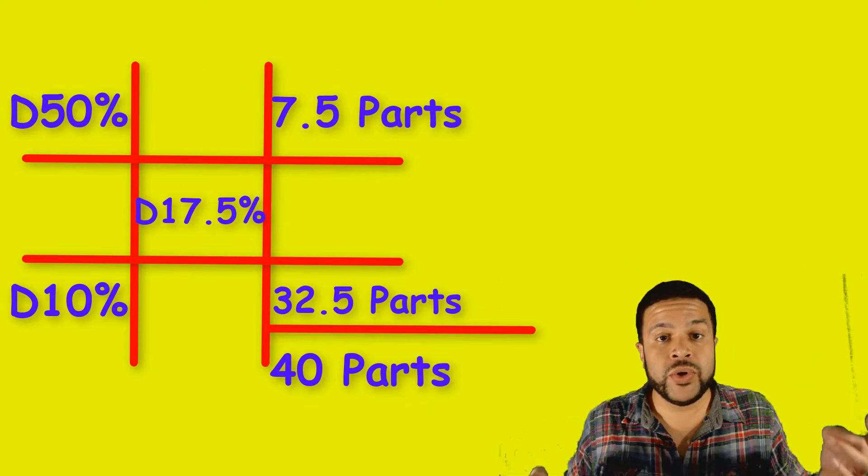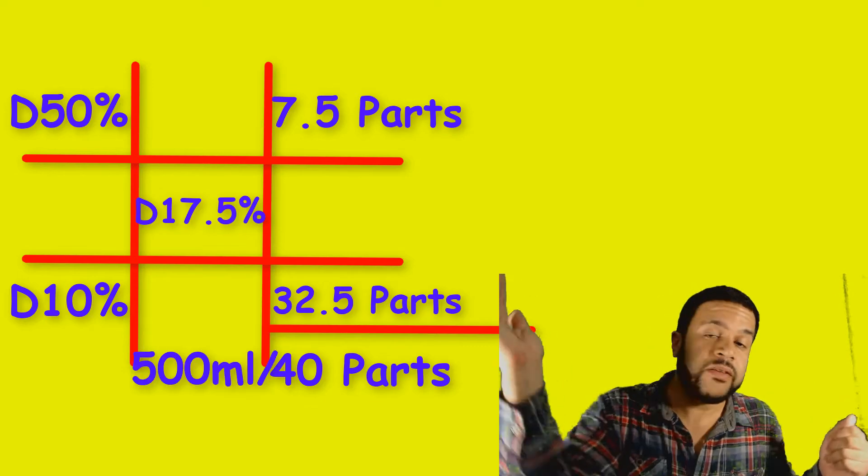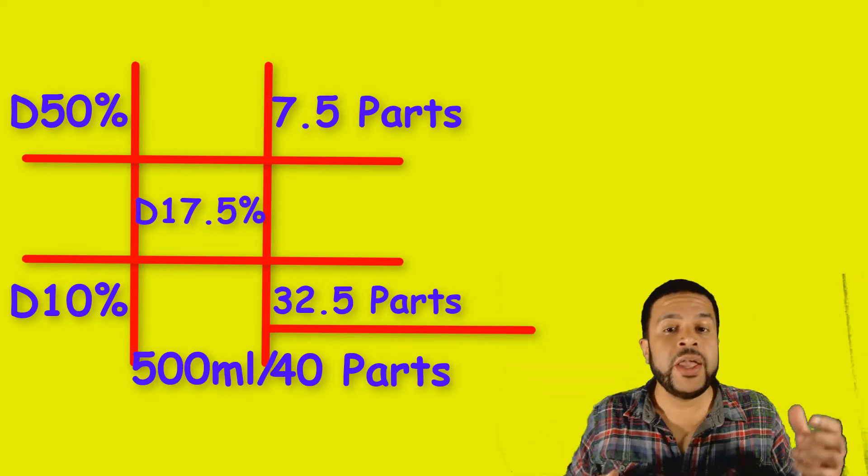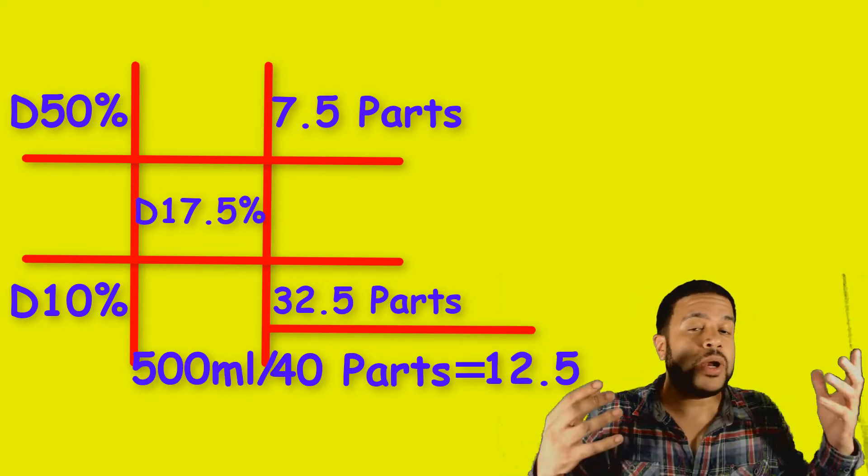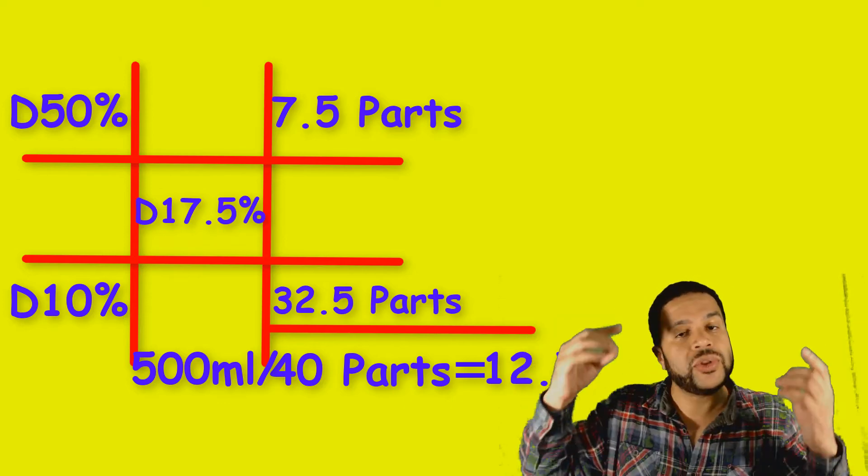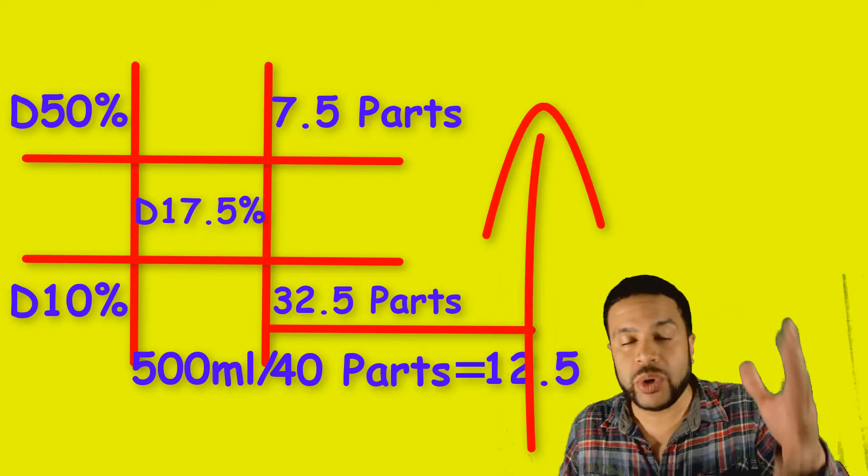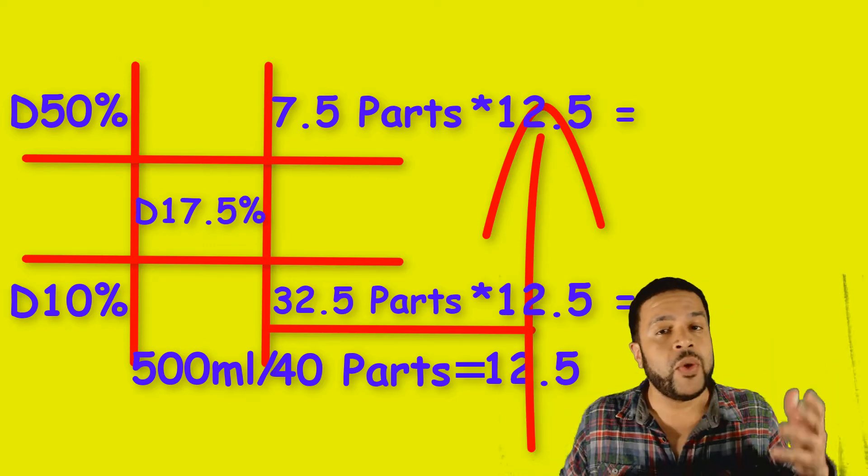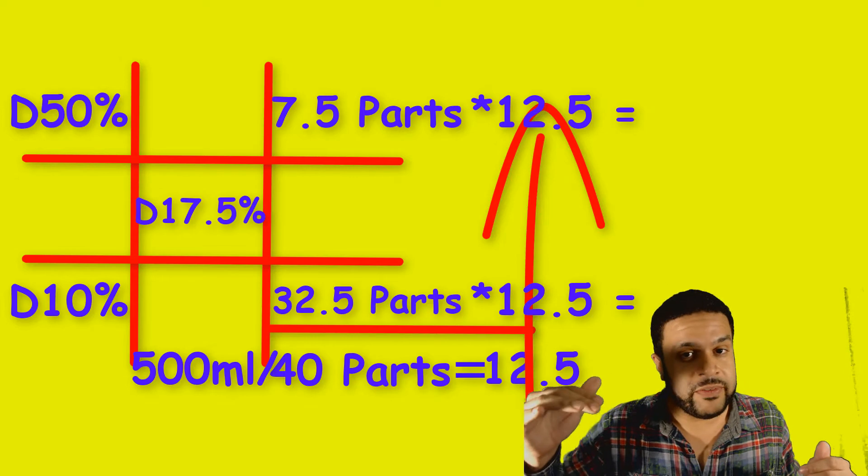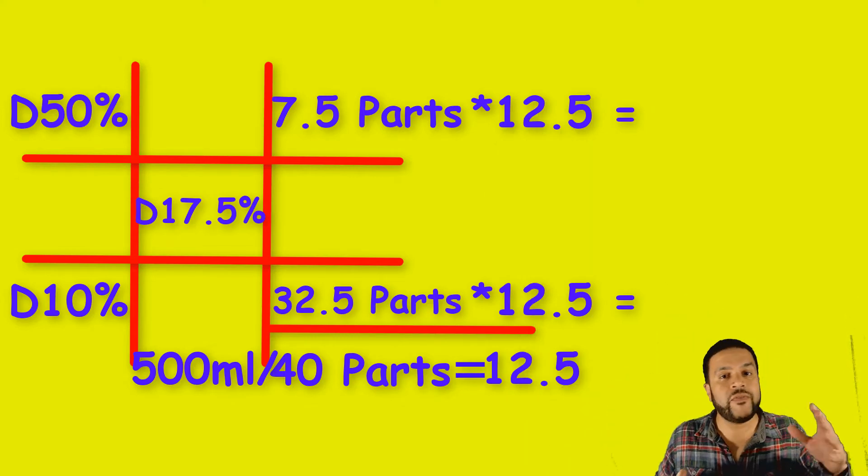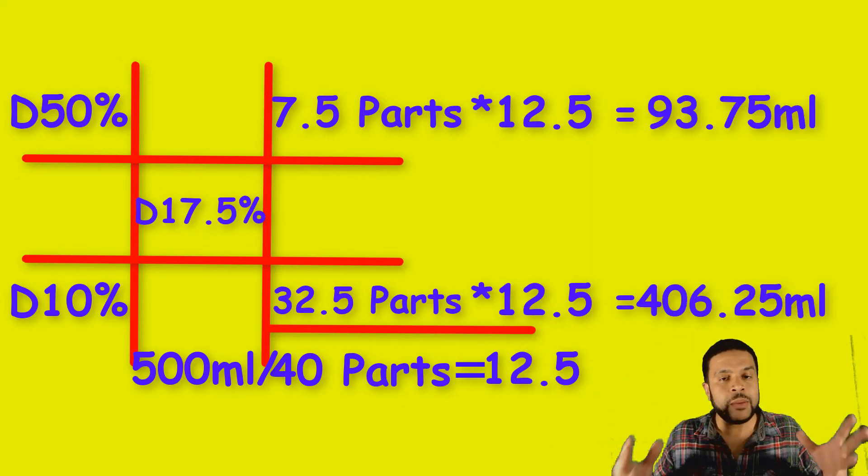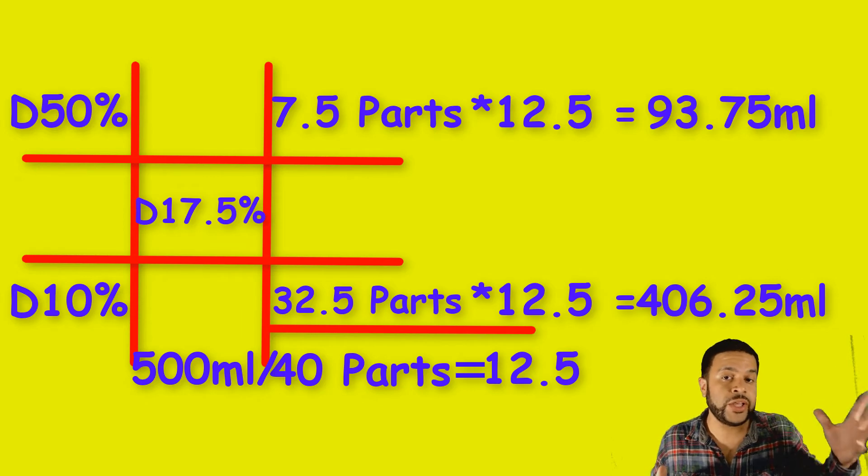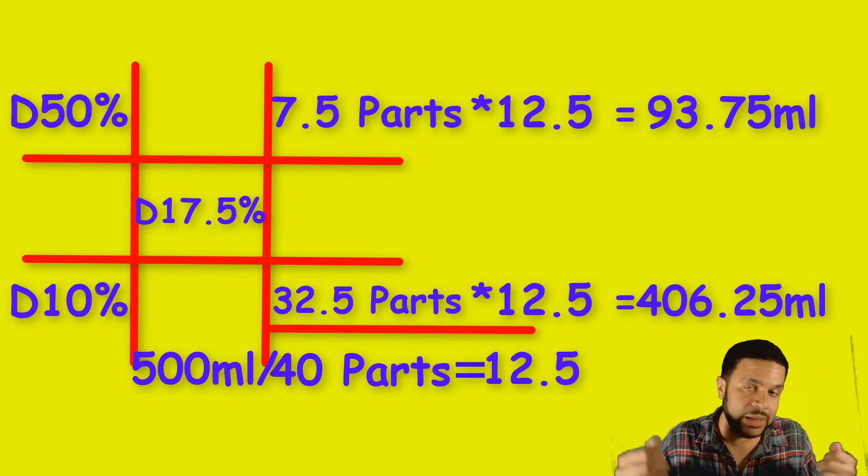So you want to take the total volume that we're using to compound, which is 500 mls. You want to divide that by the total parts, which is 40. Then you want to take the 12.5 and you want to multiply to the individual parts for each concentration. So the 7.5 multiplied by the 12.5 and then also 32.5 multiplied by 12.5, which is going to give you 93.75 at the top. And at the bottom, it's going to give you 406.25. So that's how many mls for each individual ingredient you need to draw up and put together the compound to give you the concentration of 17.5%.